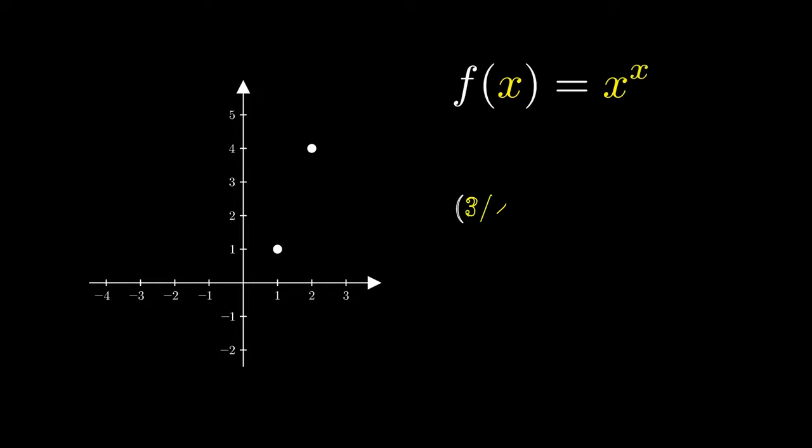But what about 3 over 2 to the 3 over 2? This is equivalent to first cubing 3 over 2, followed by taking square root. Calculating this approximately gives us 1.837. This also works with 1 half to the half, giving us 0.707. This also works with a quarter. In this case, we are taking the 4th root of a quarter, which also gives us 0.707.